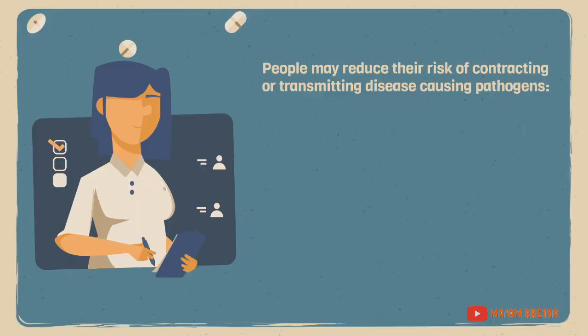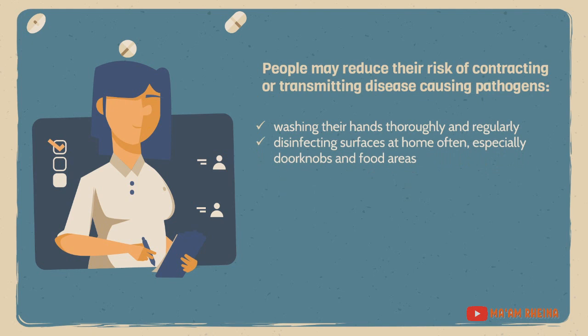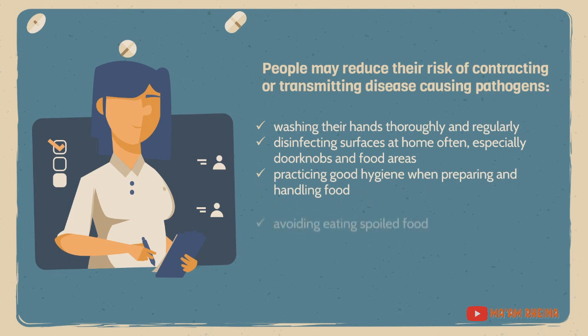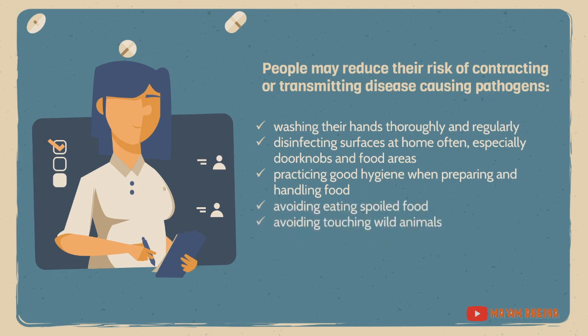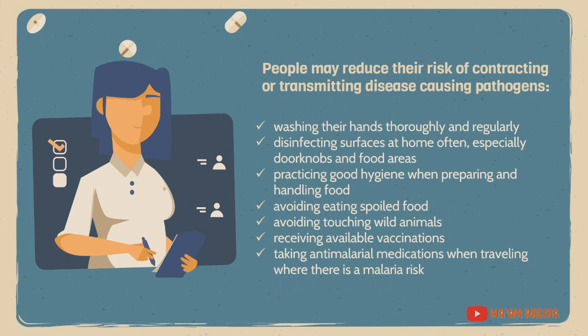People may reduce their risk of contracting or transmitting disease-causing pathogens through the following: washing their hands thoroughly and regularly; disinfecting surfaces at home often, especially doorknobs and food areas; practicing good hygiene when preparing and handling food; avoiding eating spoiled food; avoiding touching wild animals; receiving available vaccinations; and taking anti-malarial medications when traveling where there is a malaria risk.